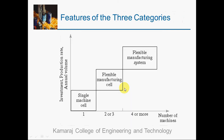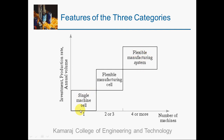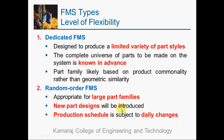A comparison chart shows the three types: on the x-axis is the number of machines, and on the y-axis investment, production rate, and annual volume are compared. An FMS has a large number of machines with higher production rate and higher investment cost. A single machine cell has lower investment and lower annual volume. An FMC falls in the medium range between the two.